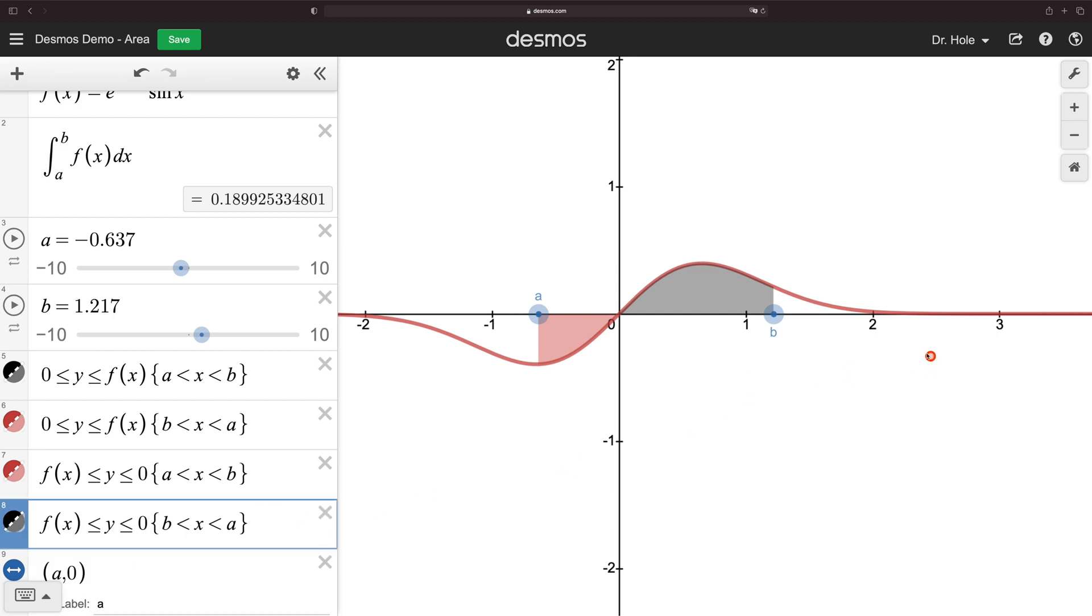And let's check that. So here a is to the left of b, and we have shading, which is red. We look at our definite integral that it's negative.